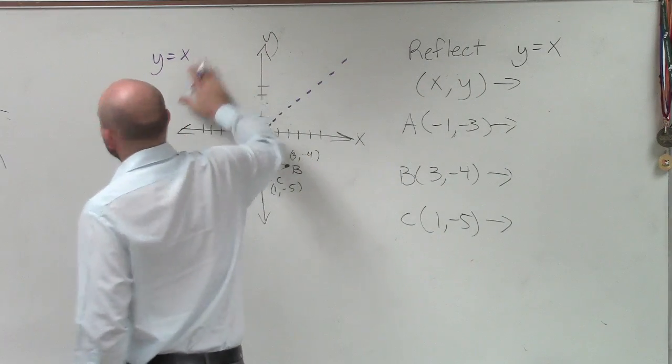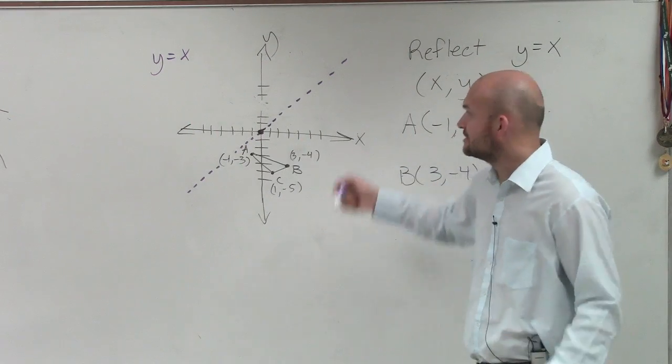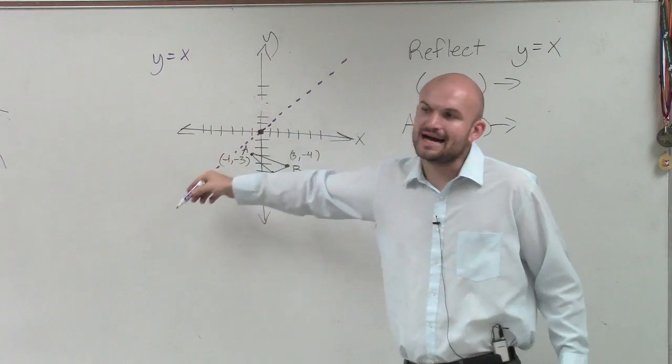So if I just gave you the equation y equals x, create a table, whatever x equals, y equals. And you guys can see, that would create that dotted line.